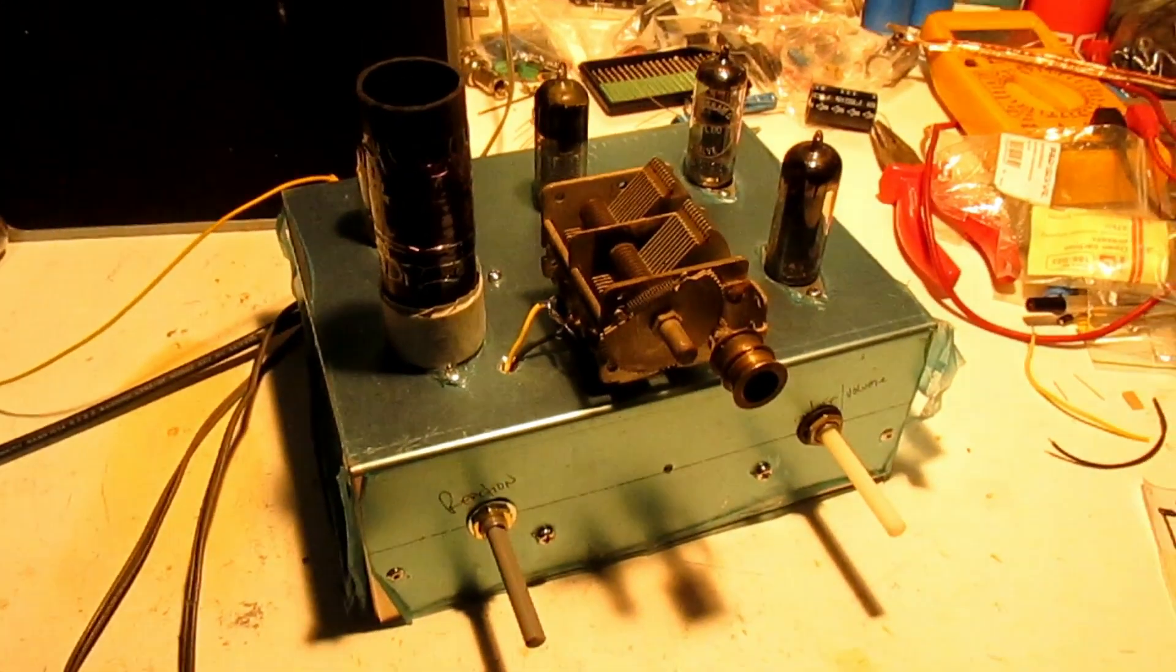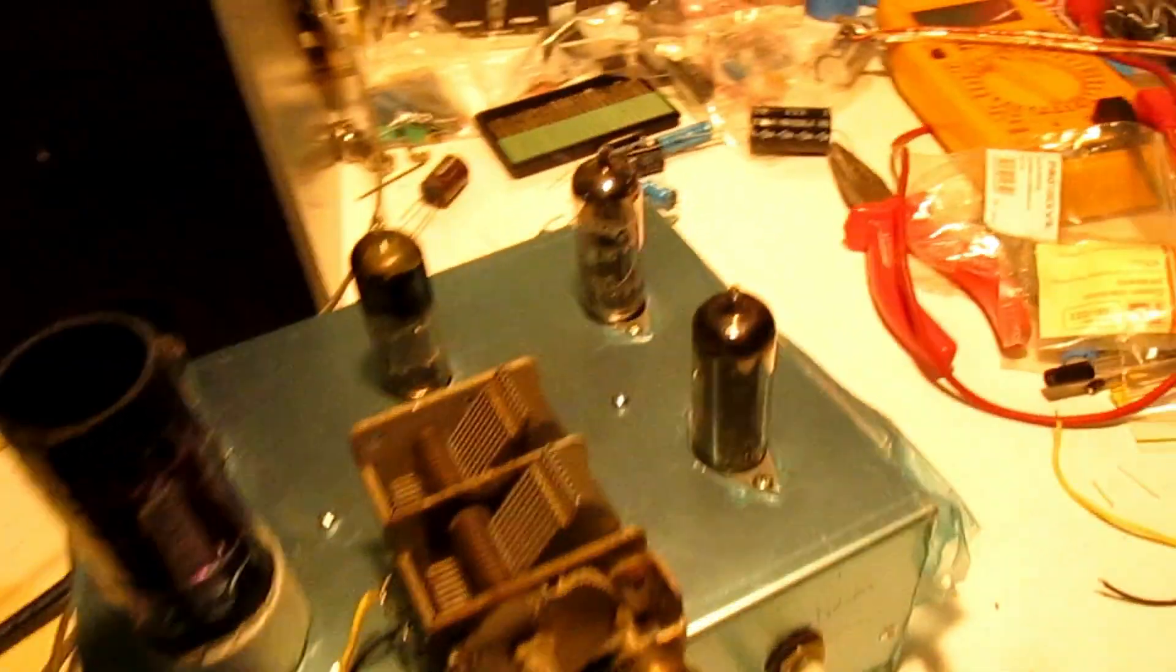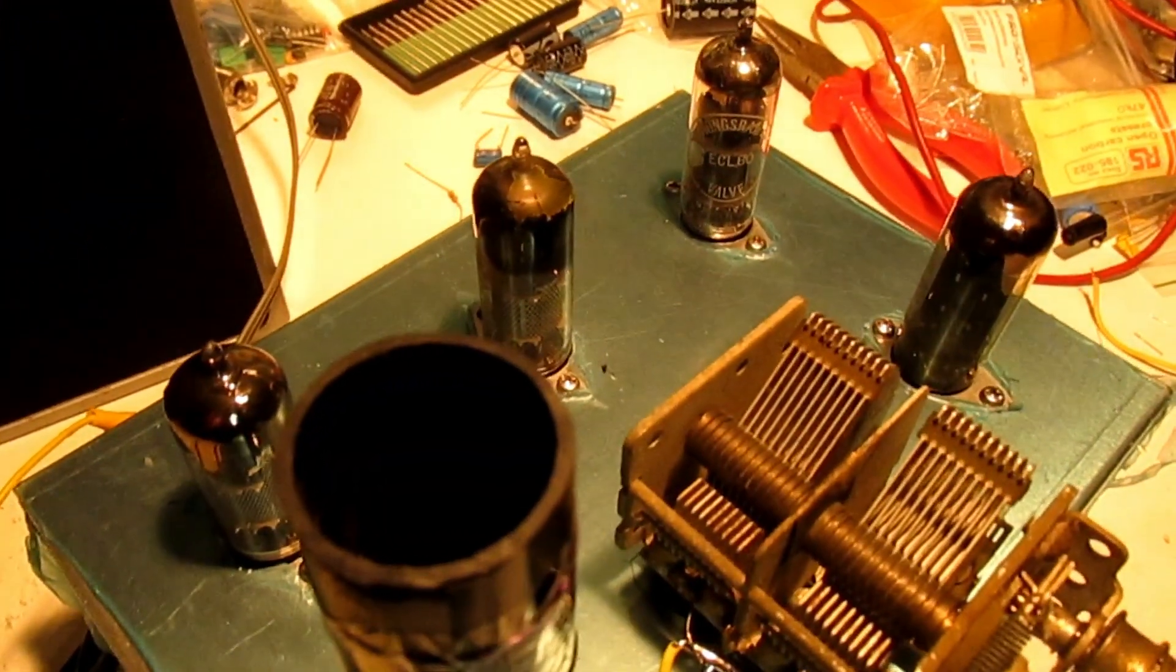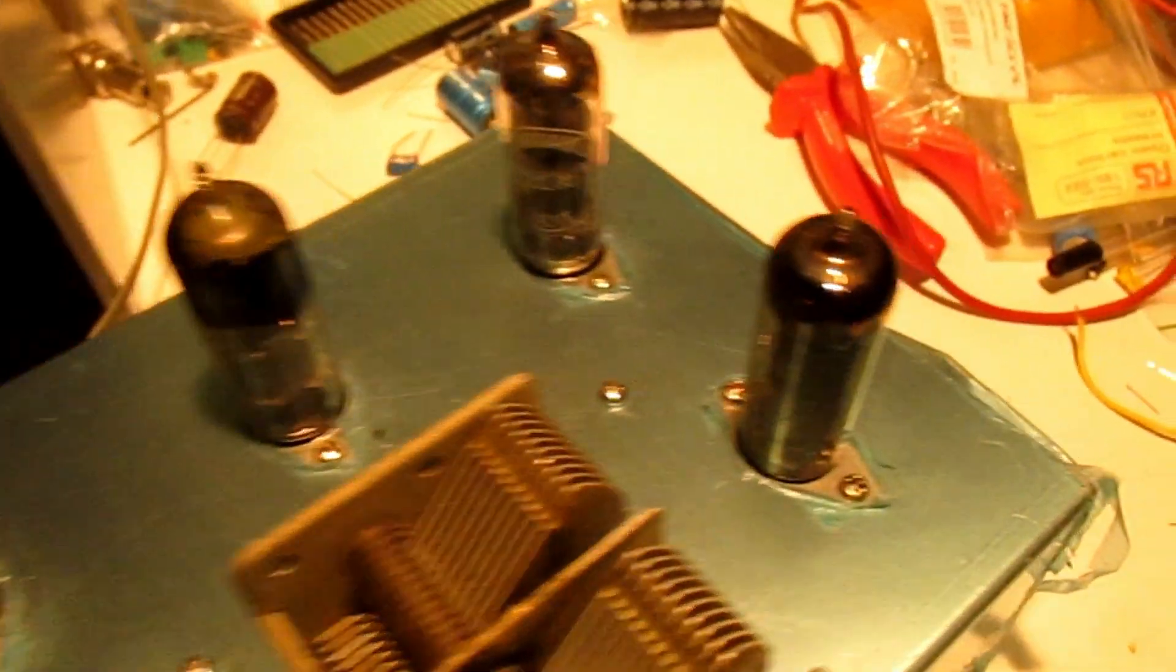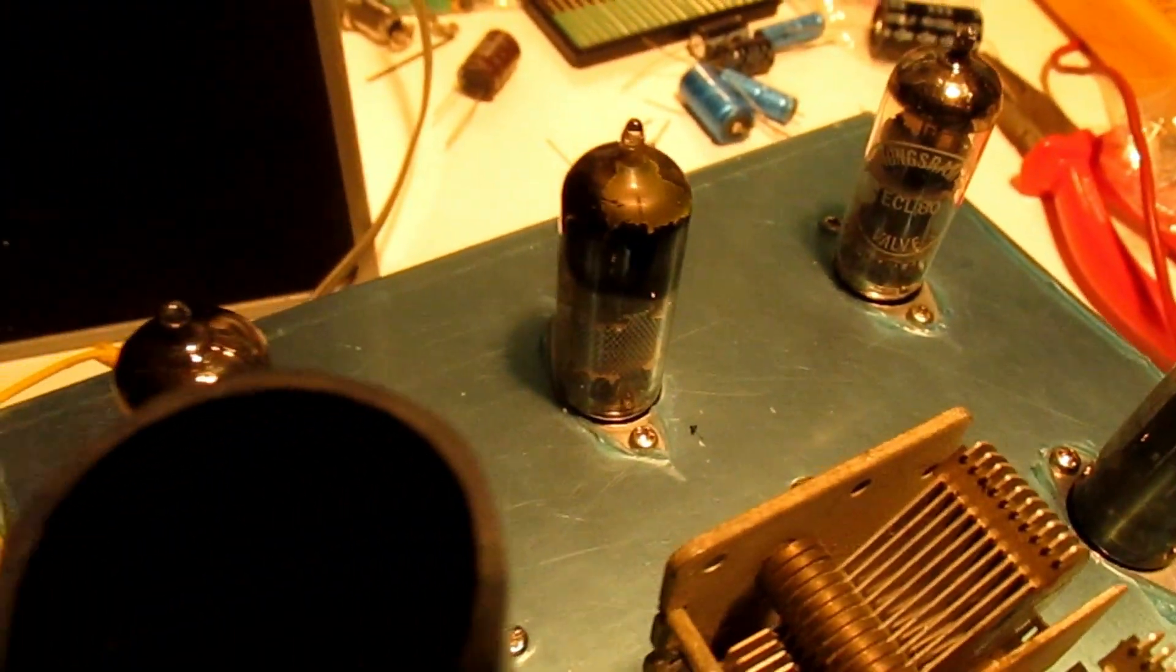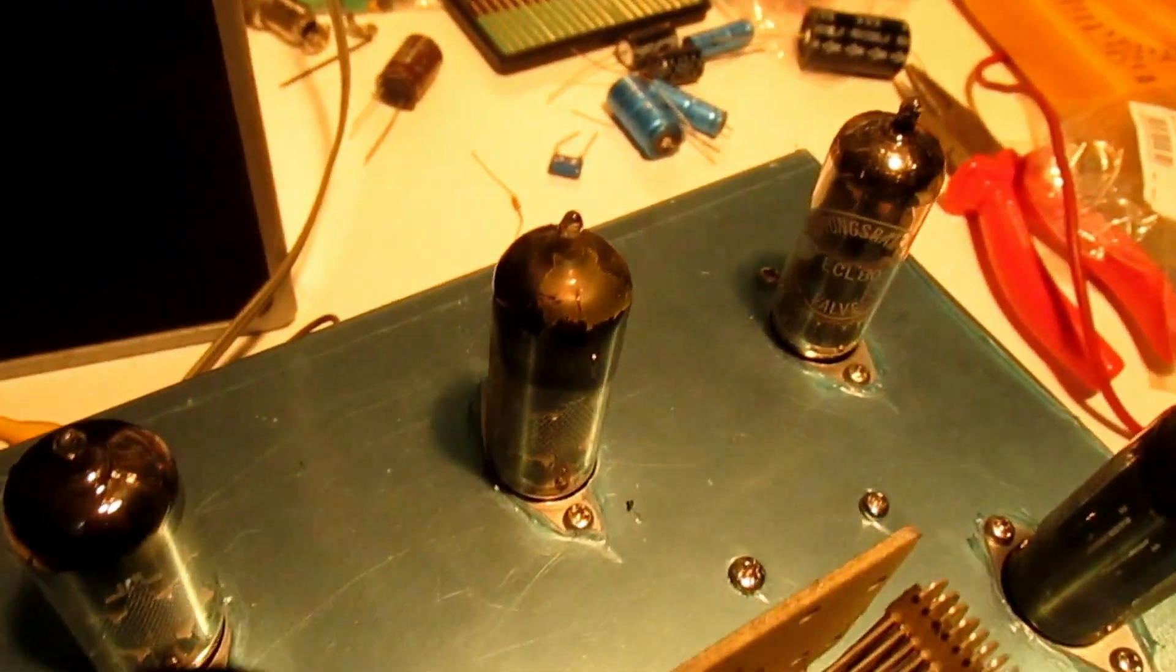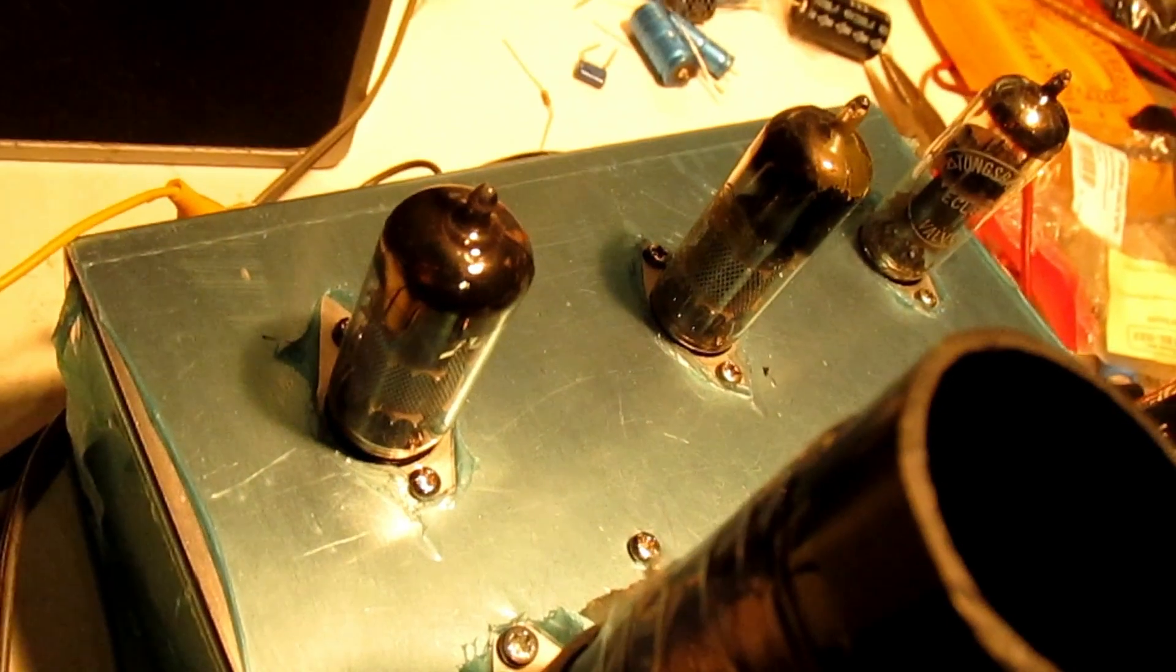It's a four-valve TRF, Tune Radio Frequency. And these are actually the valve lineups, TV valves. We've got the ECL-80 audio output, EZ-80 rectifier there. I chose that because it runs on 6.3 volts along with the other valves and then we don't need a dropper. EF-85 and EF-184 RF Pentodes.